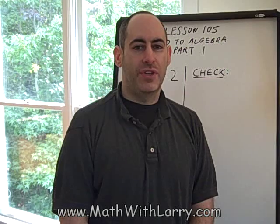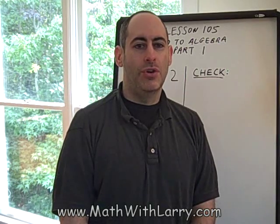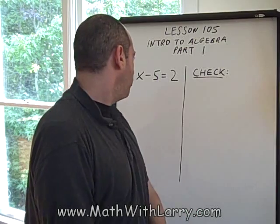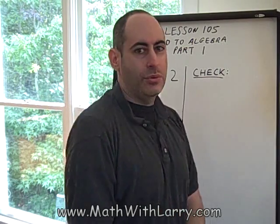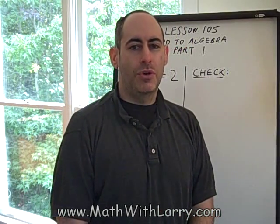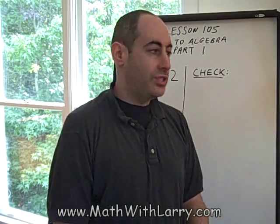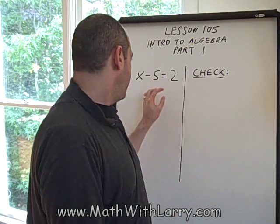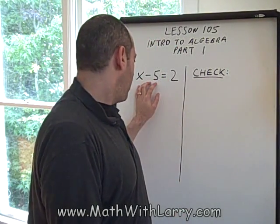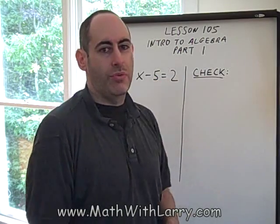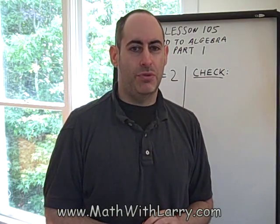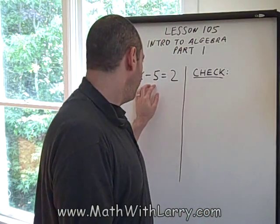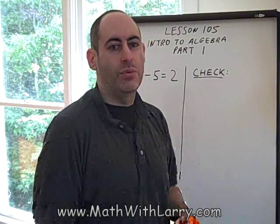Algebra is just the study of calculating an unknown value in an equation. Let's take a look at the equation here: x minus 5 equals 2. We call this an equation simply because it has an equal sign. What this means is that the left side of the equation must equal the right side. We want to keep that in mind as we work with algebra — the left side has to equal the right side.